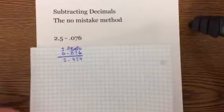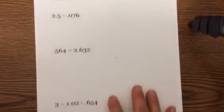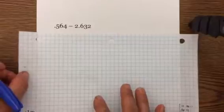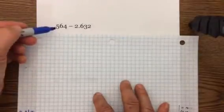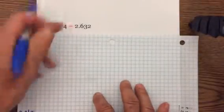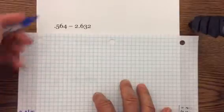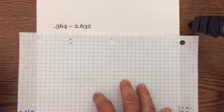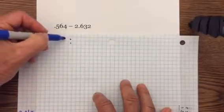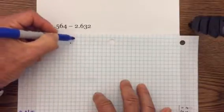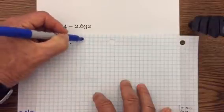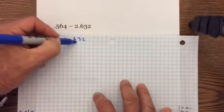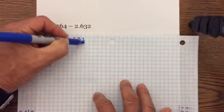Now this next one, we'll do the same thing but we're going to have to rewrite this. We have 0.564 minus 2.632. So I'm going to rewrite this with the decimal points here: negative 2.632 and 0.564.